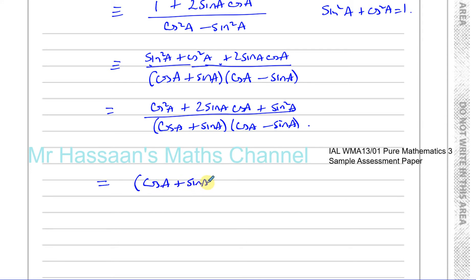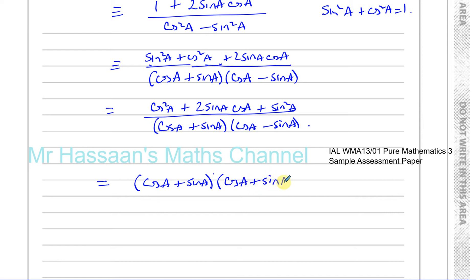The numerator is actually a perfect square. If I rewrite it as cos²A plus 2sinA cosA plus sin²A, that's a perfect square. The denominator is already written as (cosA + sinA)(cosA − sinA). The numerator can therefore be factorised as (cosA + sinA)², which I'll write as two separate brackets since we need to cancel one of those factors.